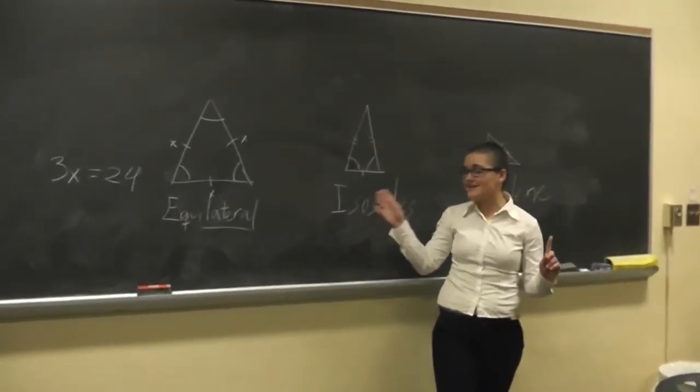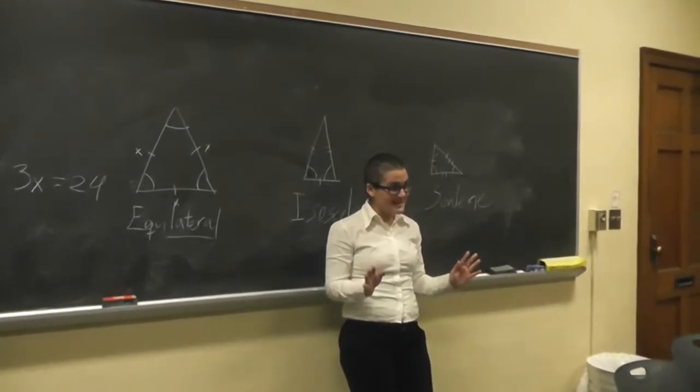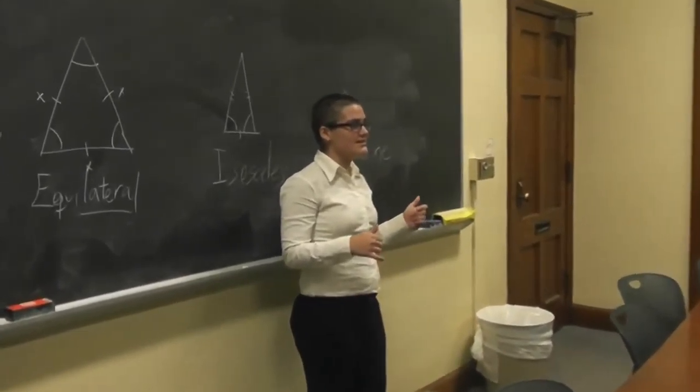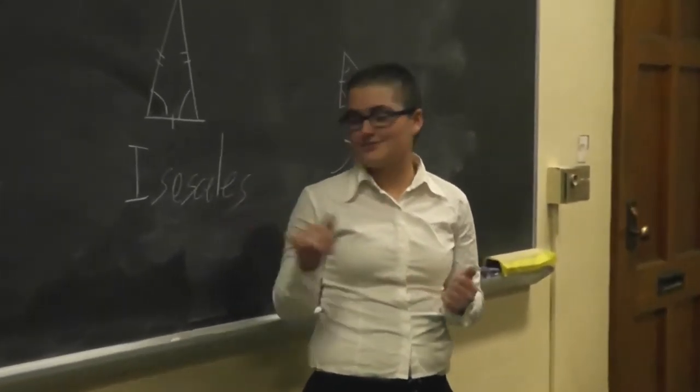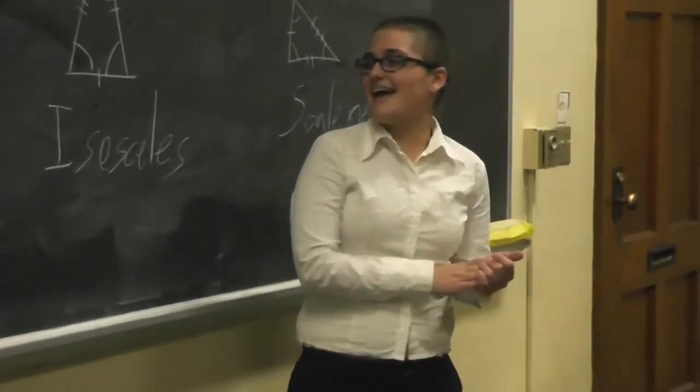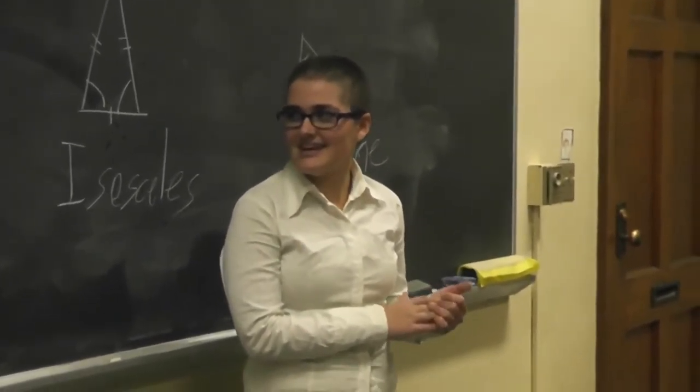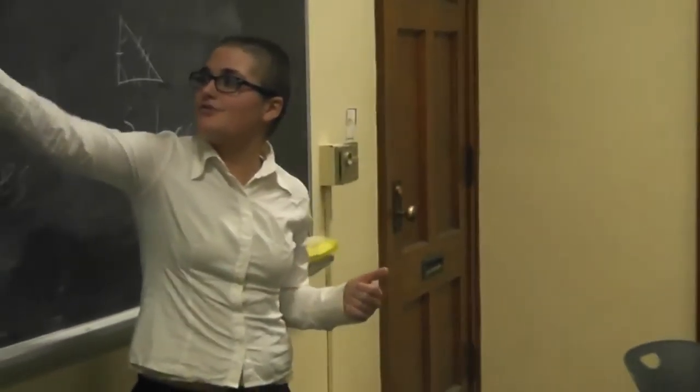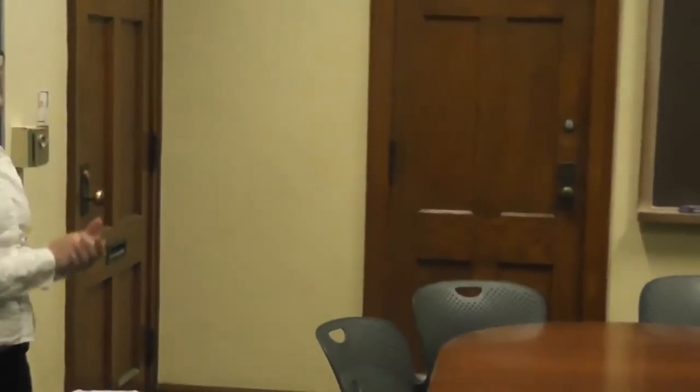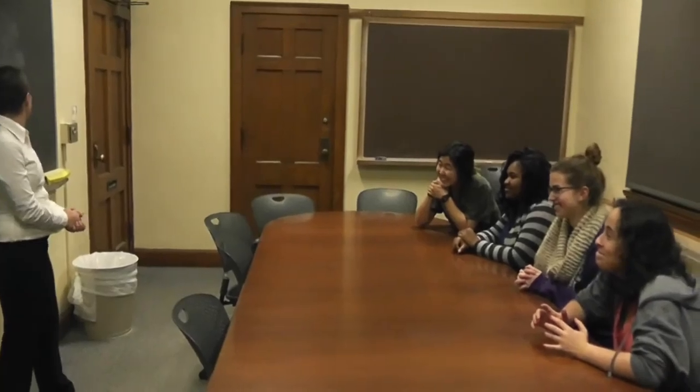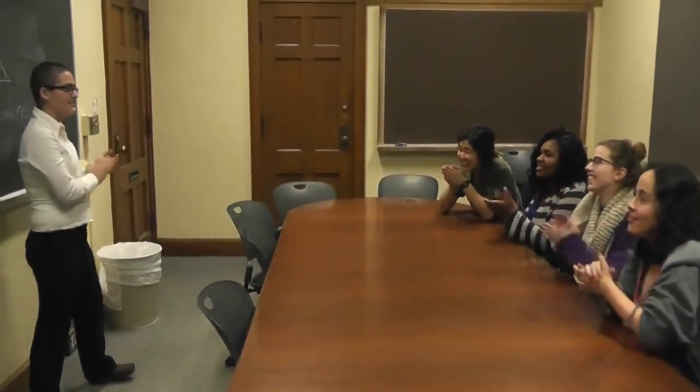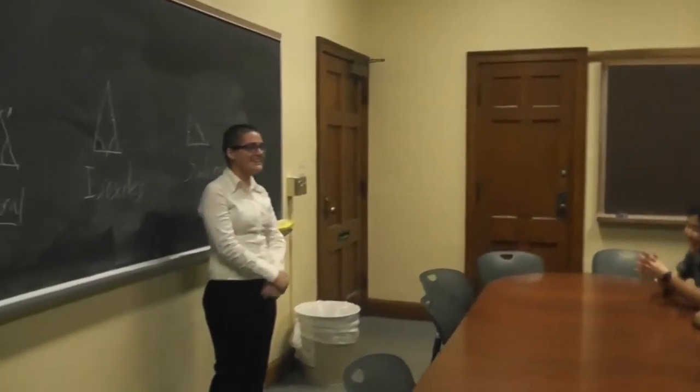Now, sometimes it can be hard to remember the names, so we're going to do a quick chant to help you. First, scalene - we're going to say scalene. Then for isosceles, we're going to say isosceles. And for equilateral, equilateral. The number of claps equals the number of sides that are the same in the triangle. All right, now we're going to all try to do it together. One, two, three. Scalene, isosceles, equilateral. All right, good job everyone. Thank you so much.